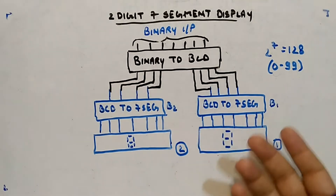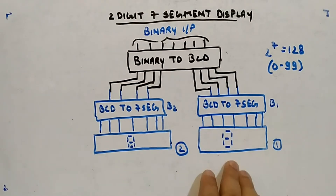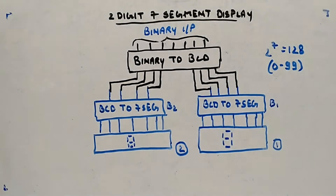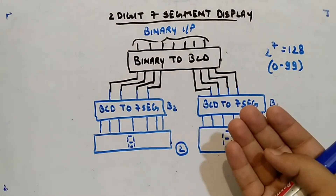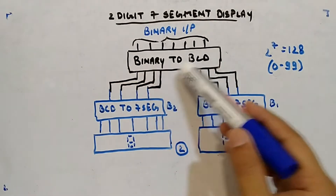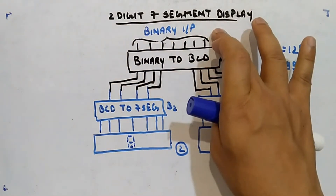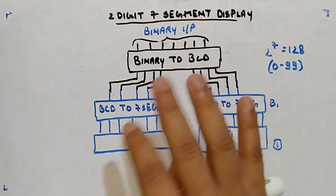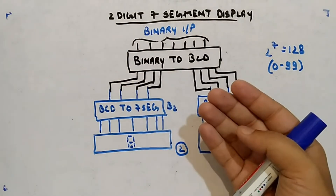These circuits will be controlling the two displays. To give input to them, we need two BCD numbers, so we have to design something that will provide these two BCDs. I'm calling it a binary to BCD converter. We are aware of binary numbers. Binary input will be given and it will convert into BCD — this converter we have seen.